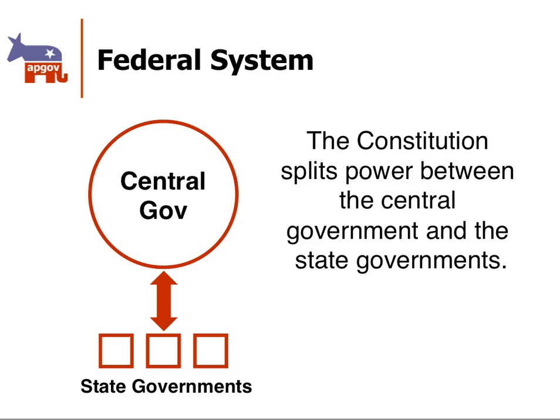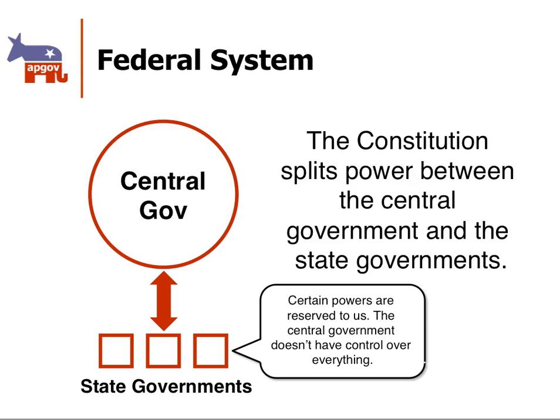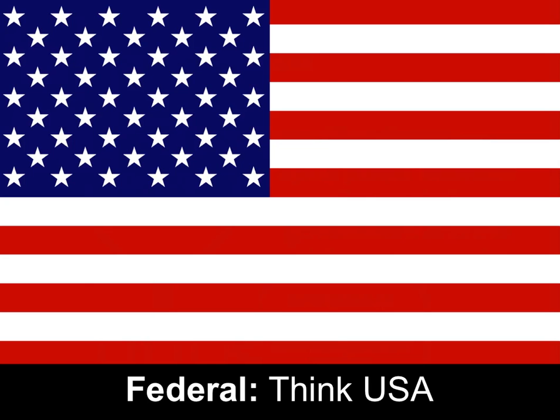First of all, a federal system is when a constitution splits power between the central government and the state governments. We drew these circle and square diagrams on the board a lot during the semester. The central government has power, but so do the states. There are certain powers reserved to the states that the Constitution gives them, and the central government can't do anything about it. We describe the power sharing with a double-sided arrow. There are some areas that the central government gets to tell the state governments what to do, but in some areas the state government can tell the central government the way it's going to be. When you hear federal, I want you to think the United States of America. We were the first country to create it — our Constitution created the first ever federal system in the world.